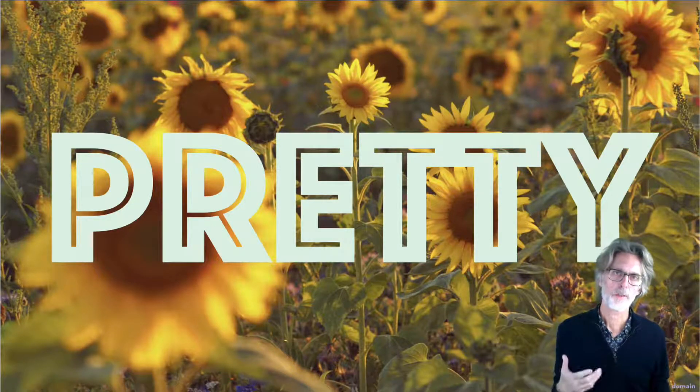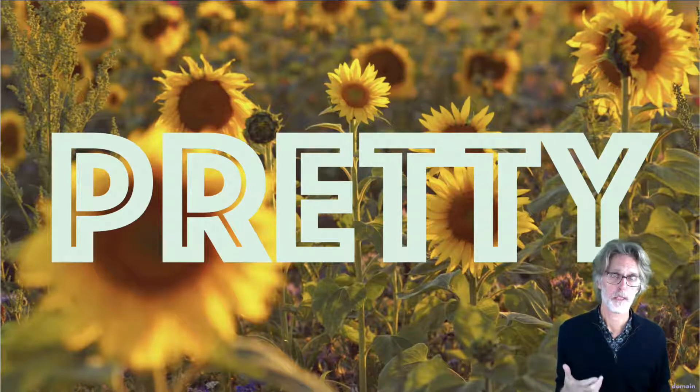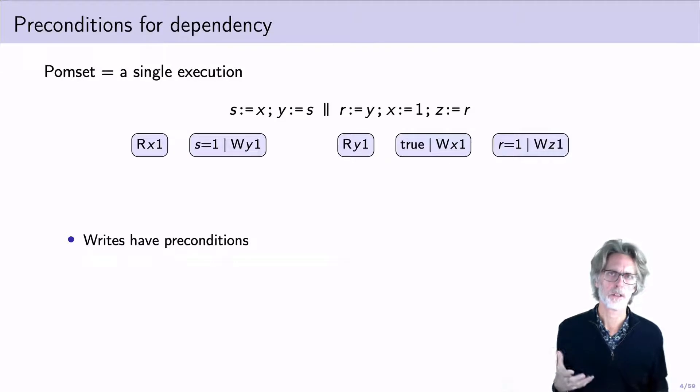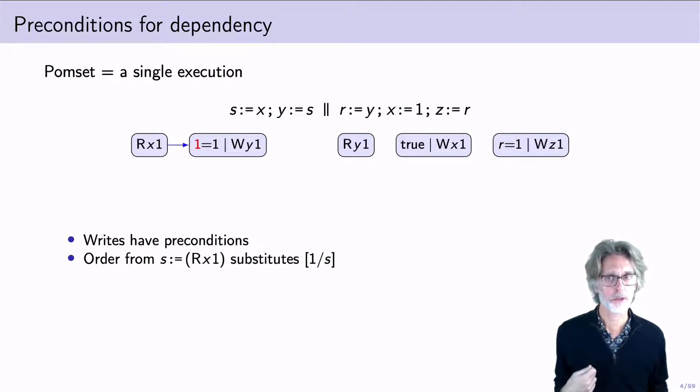When there are multiple variables, however, it's important to also model dependencies. And we can do this by embedding preconditions into the events of our POM set. For example, here, the write of y depends on the value of s, and we reflect that in the precondition. This precondition can be satisfied by prepending the read of x, which causes a substitution. And similarly, for the write of z.